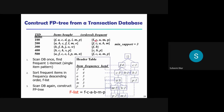While transforming from the original database to the transformed database, the individual transactions are also arranged in frequency descending order. For example, transaction one becomes FACMP — where F has the highest support count, followed by C, A, then M and P, each with support count 3. So after constructing the F-list, we convert the original database into the transformed database.